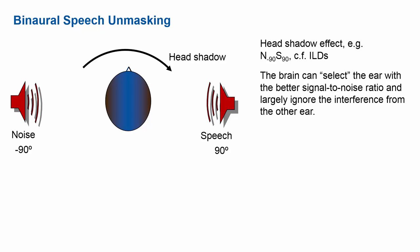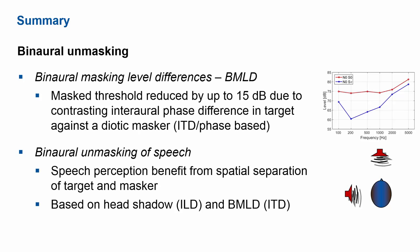To summarize our excursion into binaural unmasking: there are strong benefits from having two ears — masking level differences up to 15 decibels when introducing a π phase shift in the signal while keeping the noise identical on both ears. In many other conditions, strong benefits also arise from different phases in the target versus noise. Binaural unmasking applies not only to single tones but also to speech understanding, with benefits up to 10–13 decibels possible when noise and speech are in different locations, based on head shadow and BMLD effects.